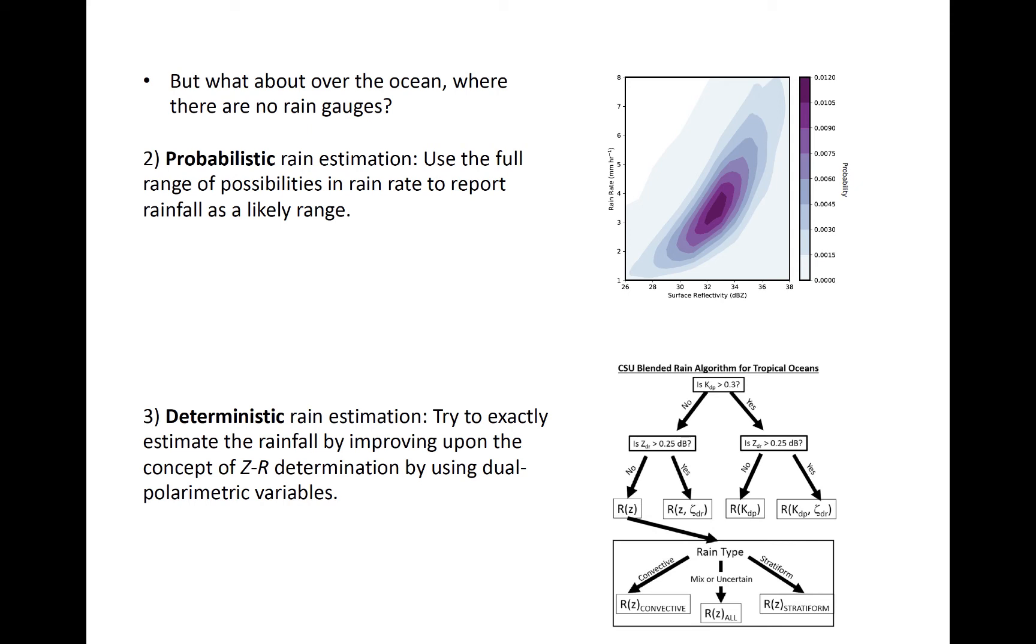However, deterministic estimates like the Z-R relationship shown earlier are still frequently used. We'll look at both the probabilistic and the deterministic methods next, starting with deterministic.